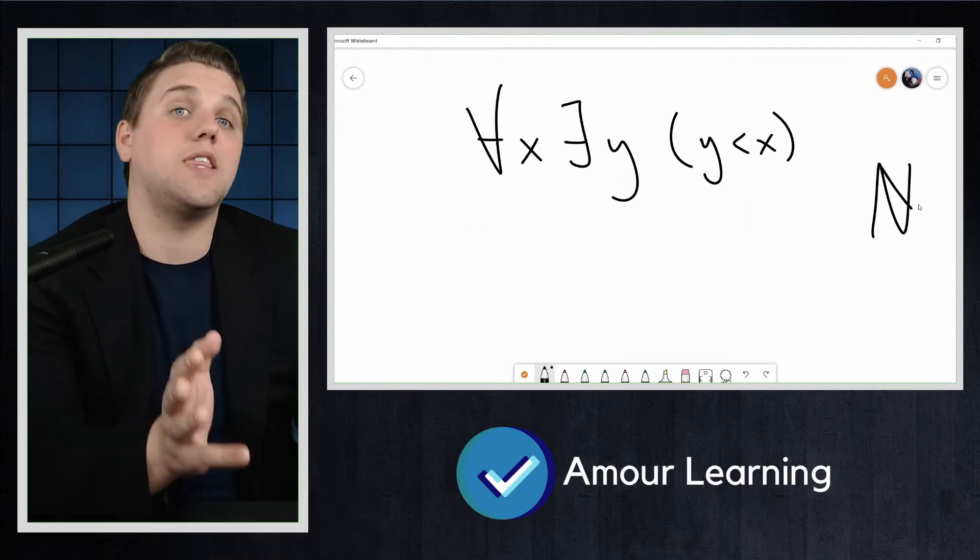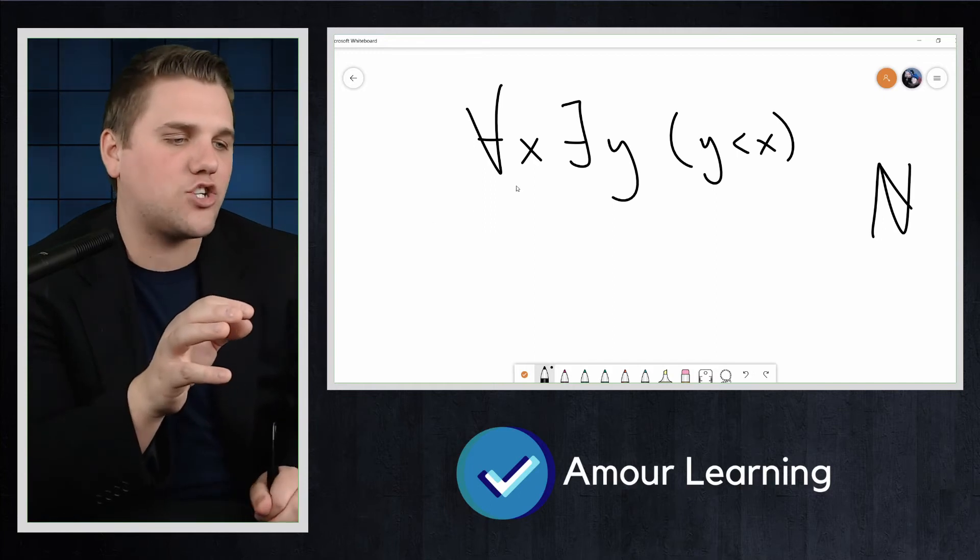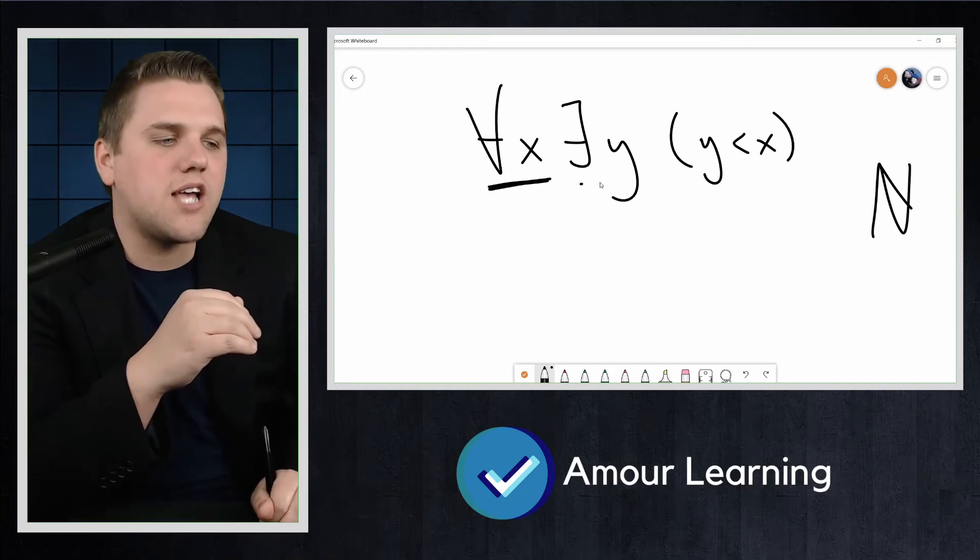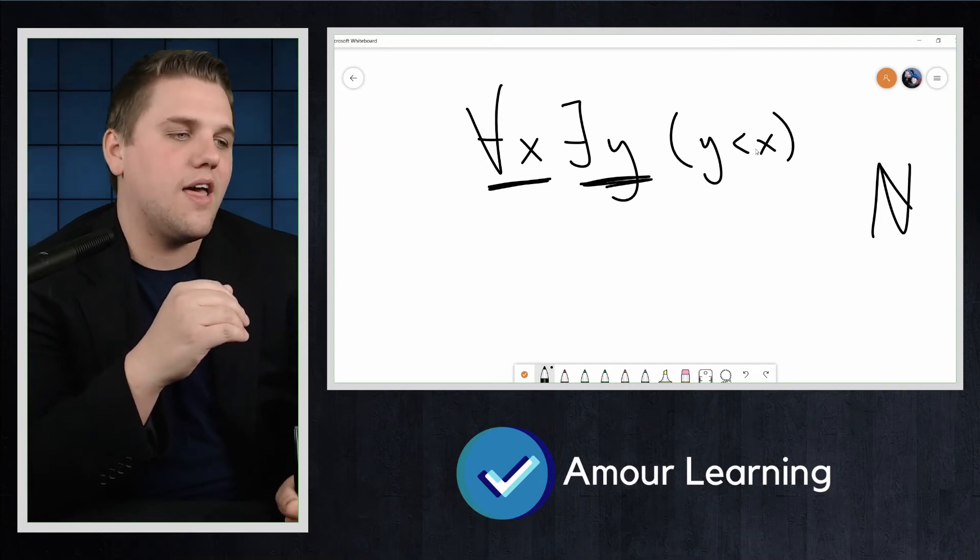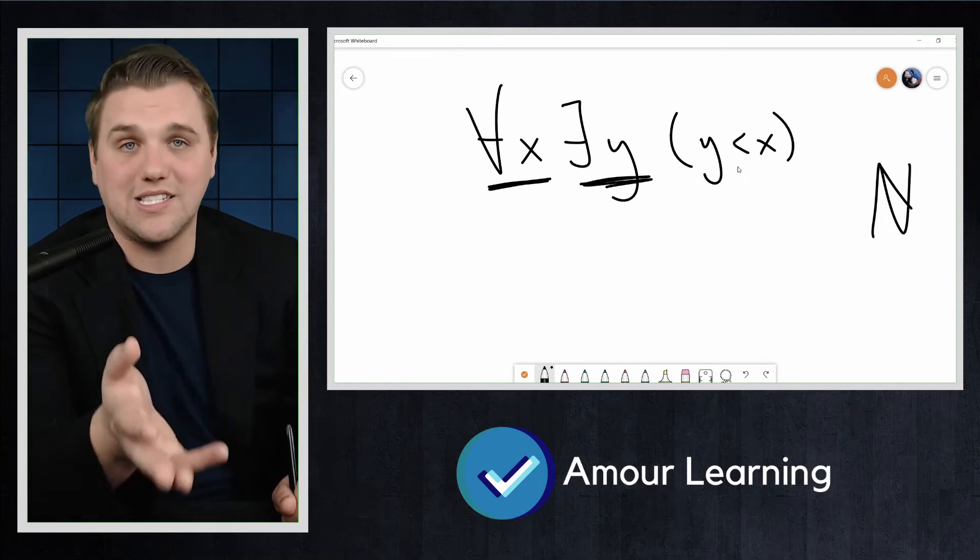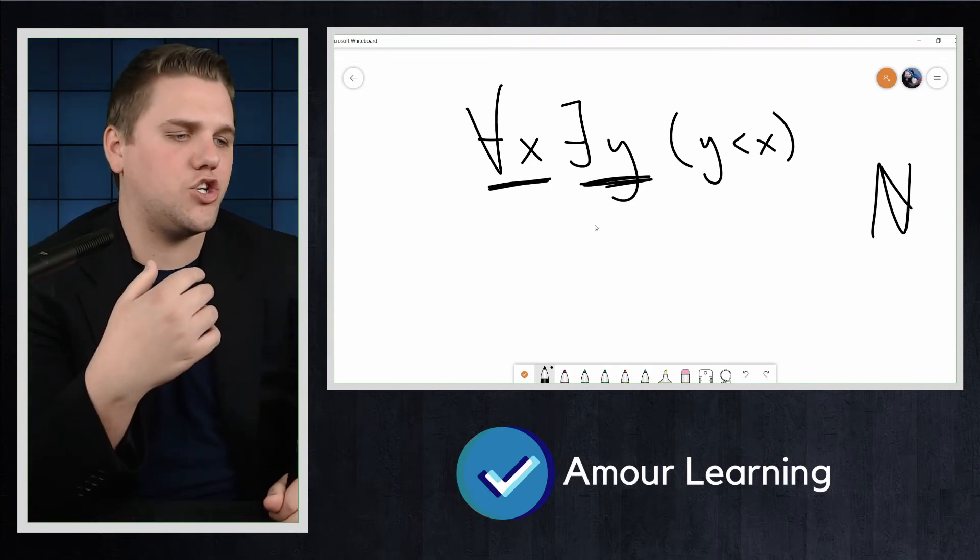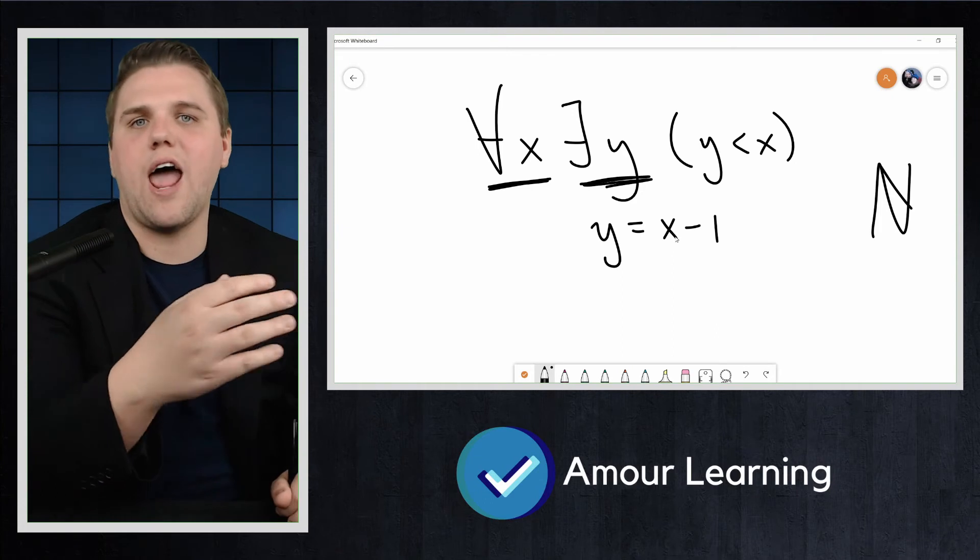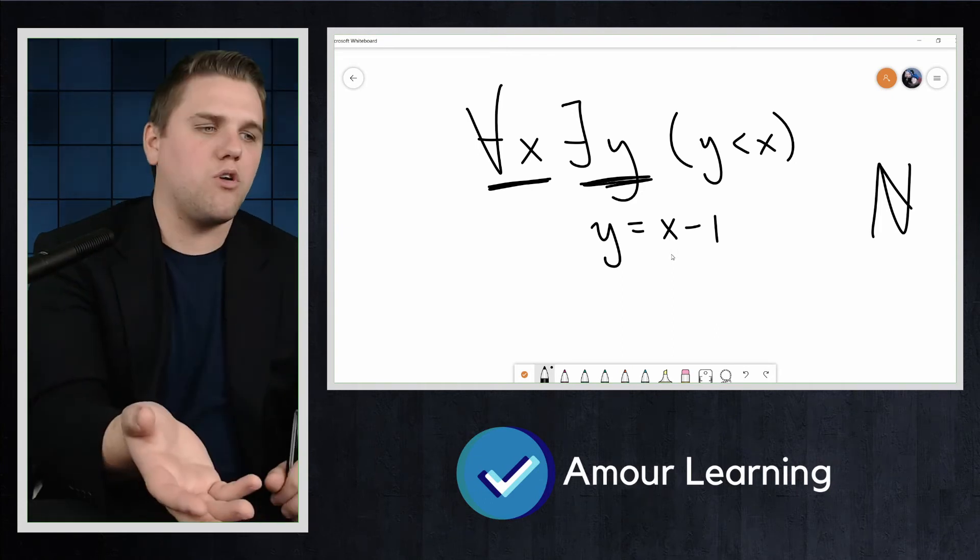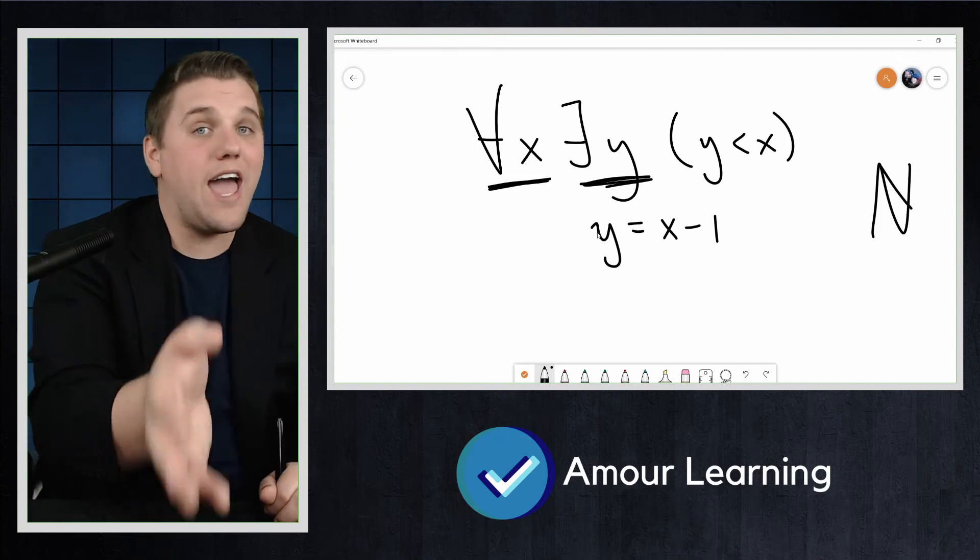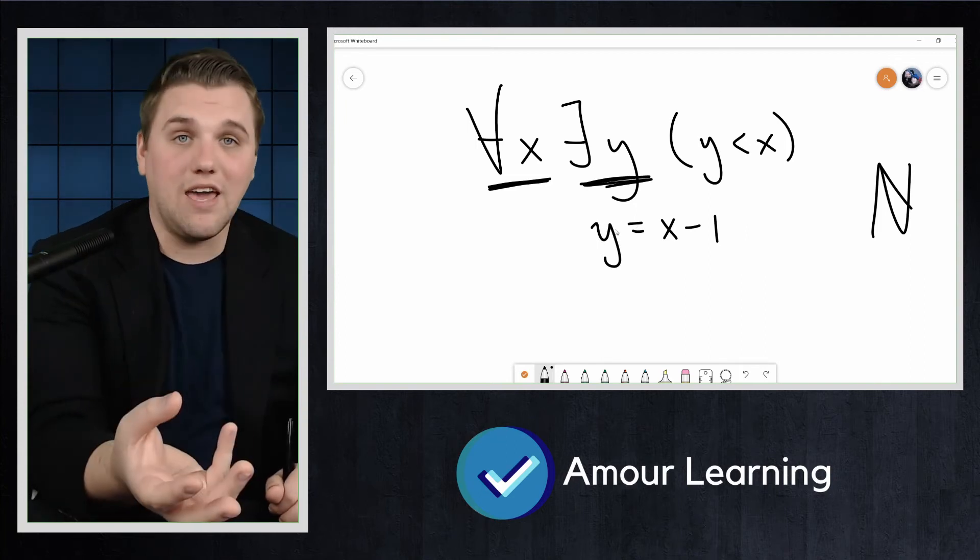For the statement to be true, we need it to be the case that no matter what natural number you pick here for X, for every X that you pick, there is some Y that you can find where that Y is less than the X that you picked. And so perhaps we can always choose that Y is X minus 1. Whatever X you give me, I'll just throw you X minus 1, and I'll show you that for every X you throw at me, the Y that I give you,